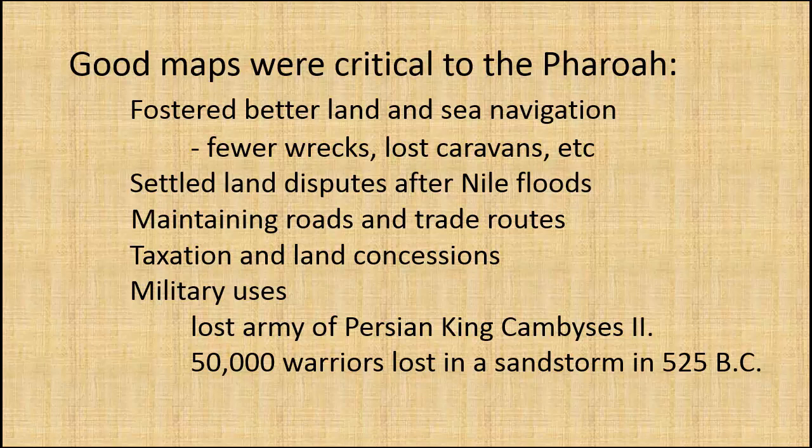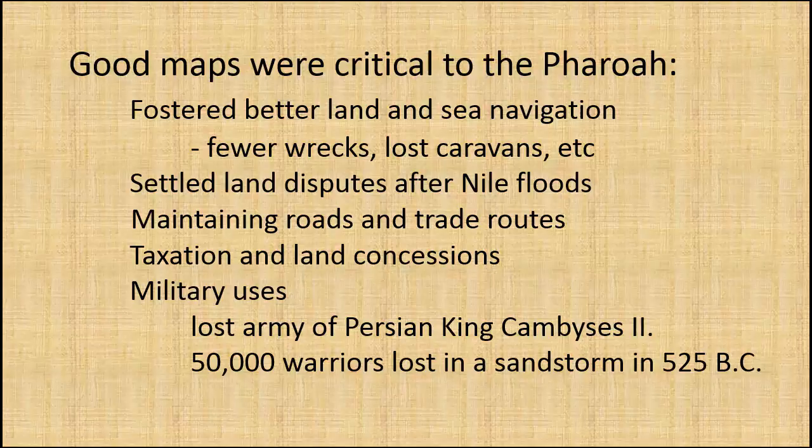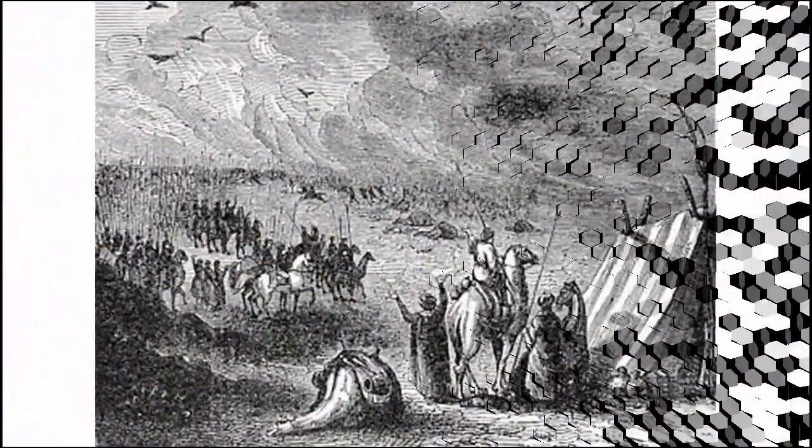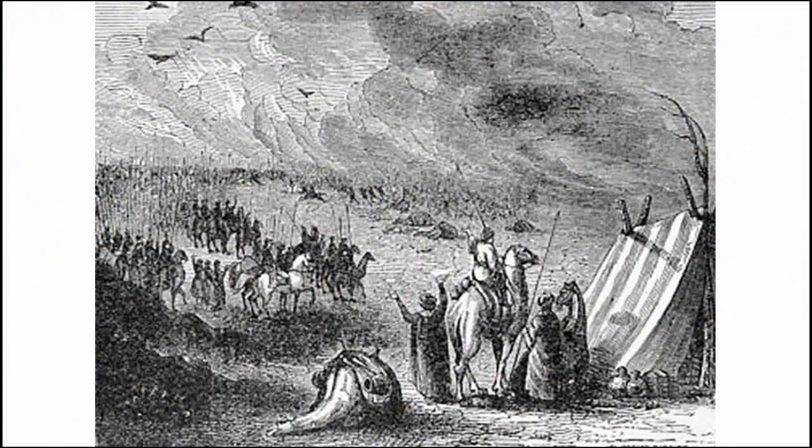The local data would be used to build larger section maps until the whole of Egypt was mapped. Also, good maps were critical to the pharaoh. They fostered better land and sea navigation, fewer wrecks, lost caravans, etc. They settled land disputes after Nile floods, maintaining roads and trade routes, taxation and land concessions, and military uses. There's the famous lost army of a Persian king. 50,000 warriors were lost in a legendary sandstorm in 525 BC. So the pharaoh had powerful reasons to invest in good surveyors, maps, and scientific experts to support key government functions. Also, Egyptians believed the sun rode across the sky from east to west each day. Eratosthenes would have made the connection to the midday sun event moving across Egypt from east to west during the day, and to the same 24-hour rotation of the stars at night.